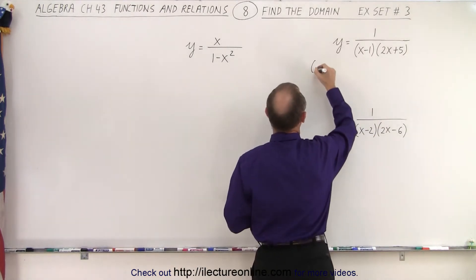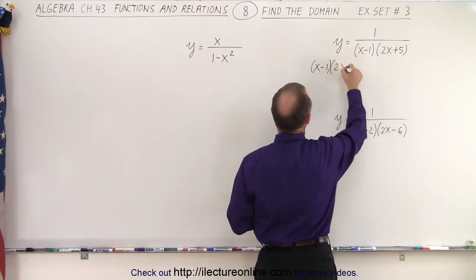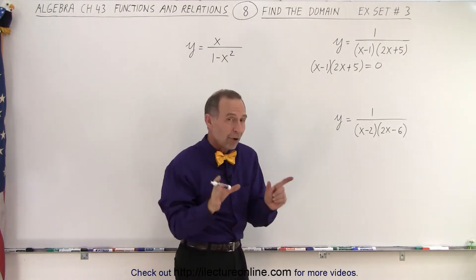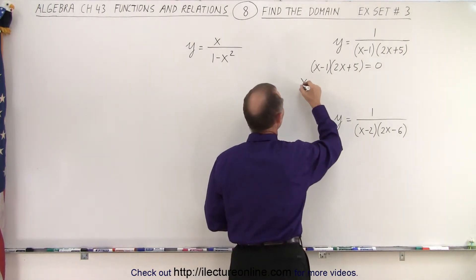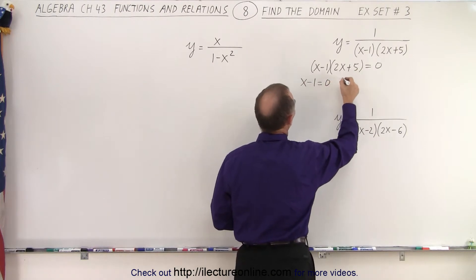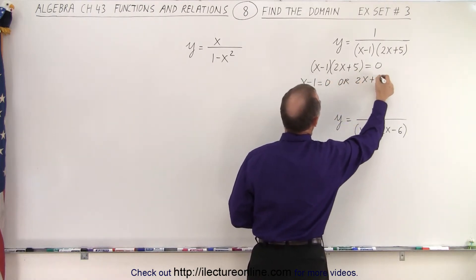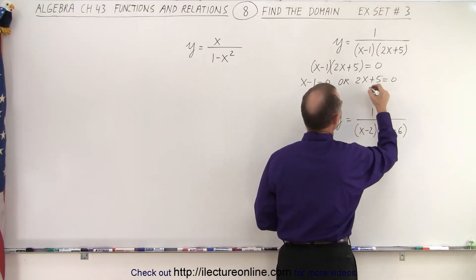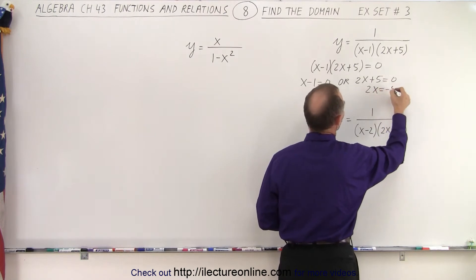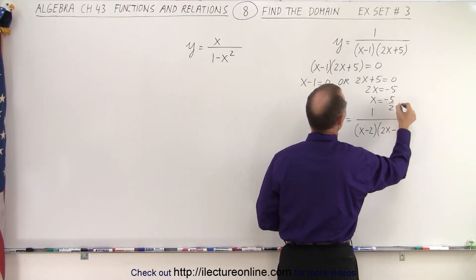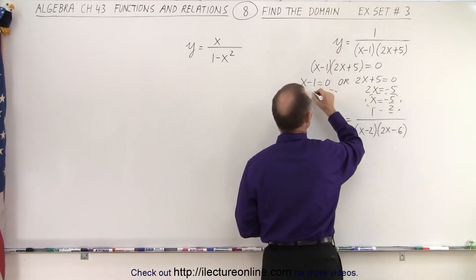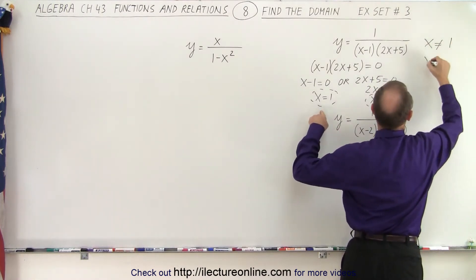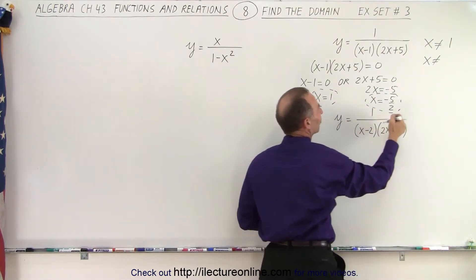So here we're going to say that x minus 1, times 2x plus 5, set equal to 0. Now we have a product equal to 0, which means that either x minus 1 equals 0 or 2x plus 5 equals 0. So in this case, x equals 1 makes the denominator 0. In the other case, 2x equals negative 5, so x equals negative 5 over 2. Those are the two values that x cannot be.